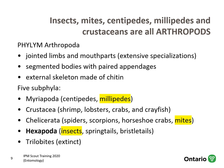Within the phylum Arthropoda there are five subphyla: the Myriapoda (centipedes and millipedes), crustaceans like shrimp, lobster, crabs, and crayfish; the Chelicerata including spiders, scorpions, horseshoe crabs, and mites; the Hexapoda including insects, springtails, and bristletails; and the extinct trilobites. Hexapoda is highlighted because it contains insects — and hexapoda, of course, means six legs.